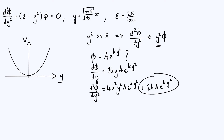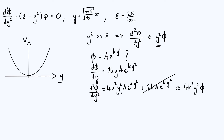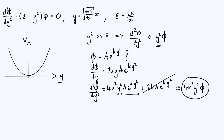The second term is proportional to e^(ky²), which is already large, but the first term is always even bigger because of the y² factor. So since we only need the differential equation to be approximately satisfied, we ignore the second term and say the second derivative is roughly 4k²y² times phi. This means our trial function is an approximate solution when 4k² equals 1, so the coefficient matches y² times phi. Solving 4k² = 1 gives k = +1/2 or k = −1/2.